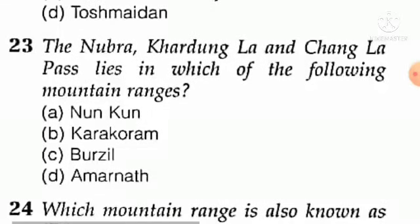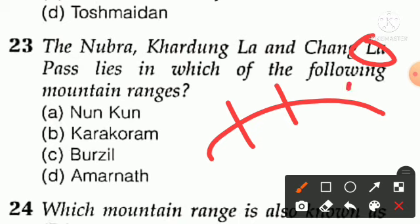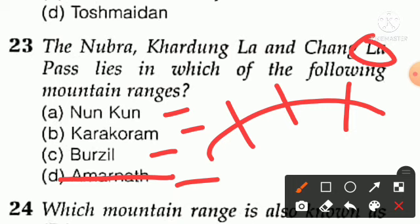Question number twenty-three: Nubra, Khardung La and Chang La passes lie in which mountain range? Option A — Nunkun, option B — Karakoram, option C — Burzil, option D — Amarnath. Amarnath is not the answer, Burzil is not the answer, Nunkun is not the answer. The right answer is option B — Karakoram Range. Nubra pass, Khardung La, and Chang La are all on the Karakoram Range.